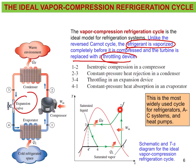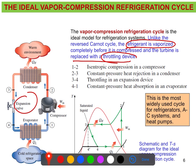Looking at the TS diagram, process 1 to 2 is isentropic compression. Process 2 to 3 is constant pressure heat rejection in the condenser, which rejects heat to the warm environment. Process 3 to 4 is throttling expansion — not isentropic as in the Carnot cycle. Process 4 to 1 is constant pressure heat absorption in the evaporator, absorbing heat from the low temperature source.